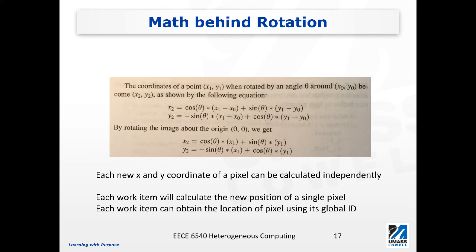To be more specific, if we're rotating a point at x1 and y1 around the origin coordinates x0 and y0, the new location of this pixel is x2 and y2. Using a formula to represent the new location considering the rotation angle: x2 equals cos(θ) times (x1 minus x0) plus sin(θ) multiplied with (y1 minus y0). Similarly, y2 equals minus sin(θ) multiplied with (x1 minus x0) plus cos(θ) multiplied with (y1 minus y0).